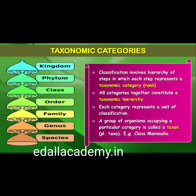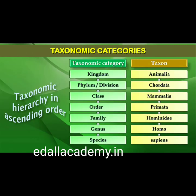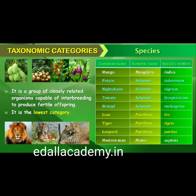Taxonomic groups and categories are distinct biological entities and not merely morphological aggregates. Taxonomical studies of all known organisms have led to the development of common categories such as kingdom, phylum or division (for plants), class, order, family, genus and species. All organisms, including those in the plant and animal kingdoms, have species as the lowest category. The basic requirement for placing an organism in various categories is knowledge of characters of an individual or group of organisms, which helps in identifying similarities and dissimilarities.